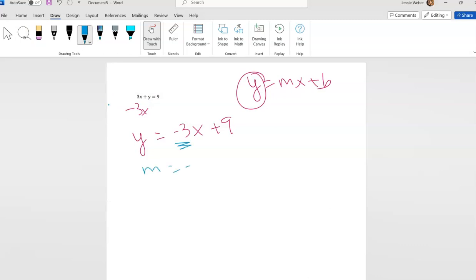What does this tell me though? This right here, my slope is negative 3, and then my y-intercept is 9, so the point (0, 9).